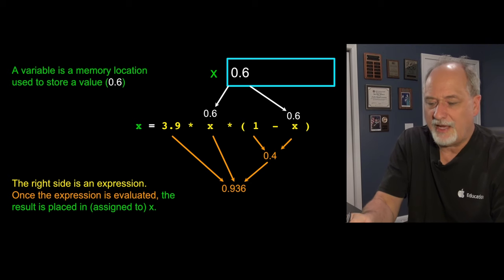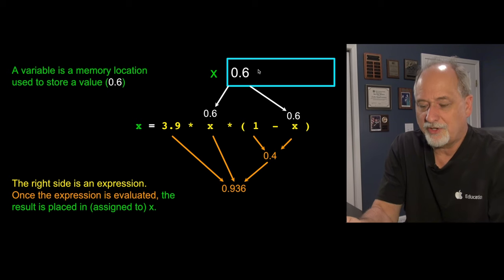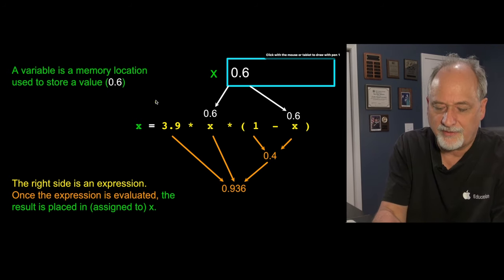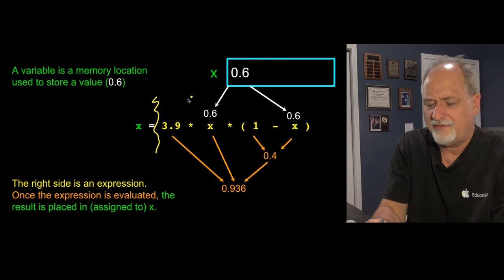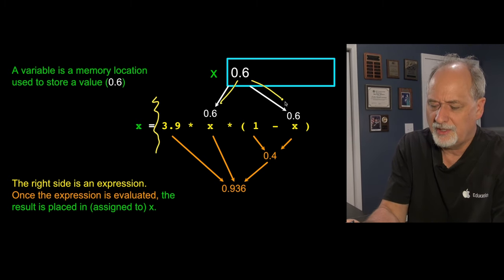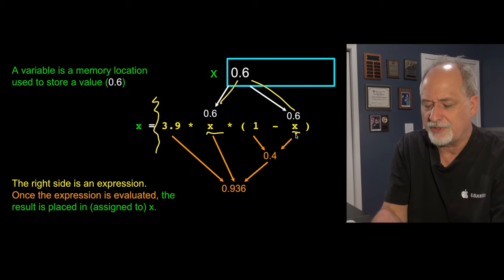And so if, for example, we have x and x has 0.6 in it, what happens is that it first sort of ignores this part right here and evaluates the expression. So it pulls the 0.6. Everywhere x appears, it pulls 0.6 out. Then it starts running these calculations. And then it has the new value.